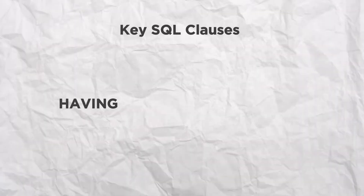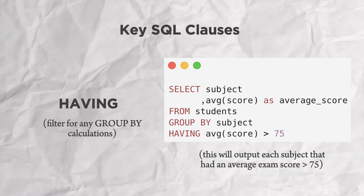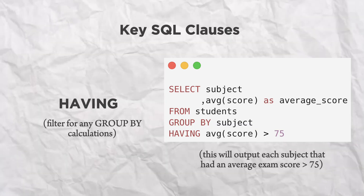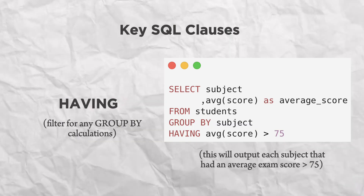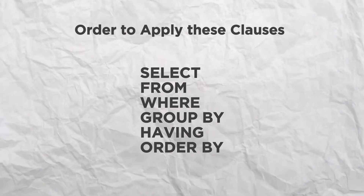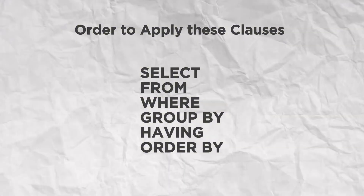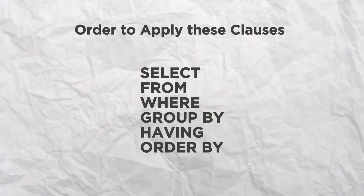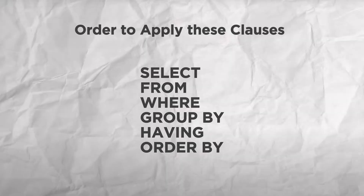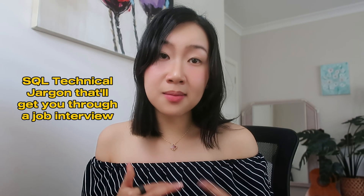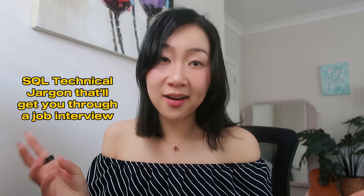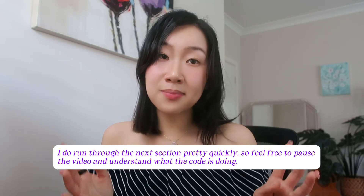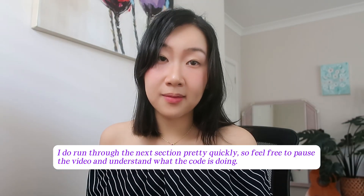The last critical SQL clause that you need to know is the HAVING clause, which is similar to the WHERE clause but works on your aggregate functions. And this is the order that you should be applying all these clauses in — I definitely wish I had learned this when I first started learning SQL.